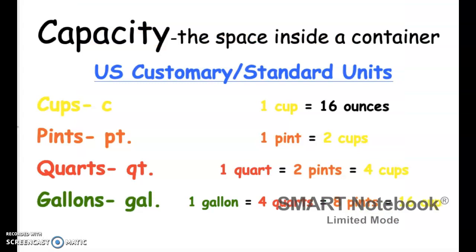One thing that you don't necessarily have to know in third grade is that one cup equals 16 ounces, but it is good just to know. So remember: one pint is two cups, one quart equals two pints which also equals four cups, and one gallon equals four quarts, which equals eight pints, which equals 16 cups. You can see the abbreviations again on the left.